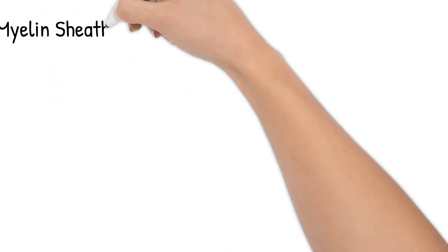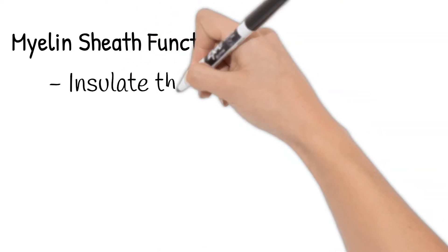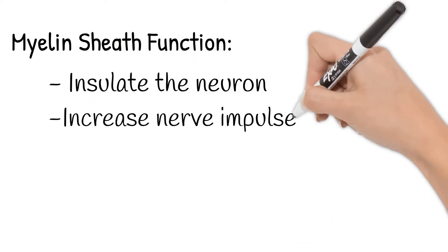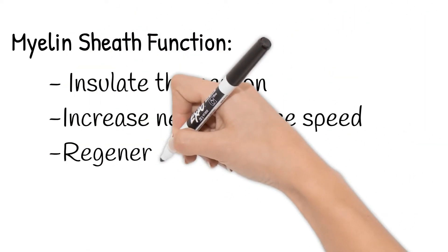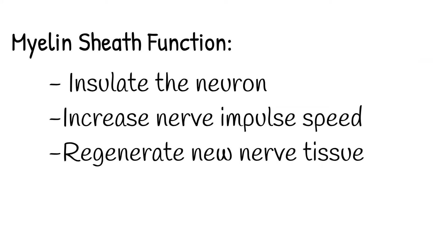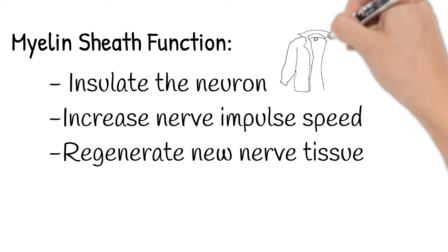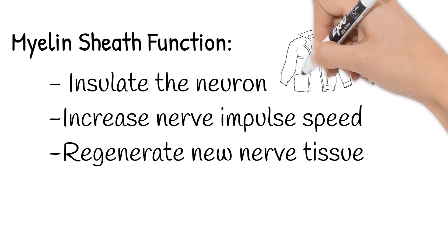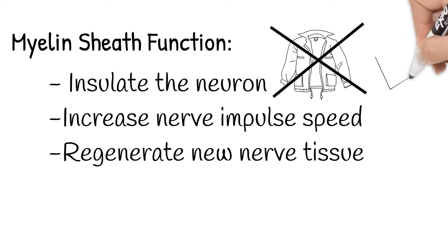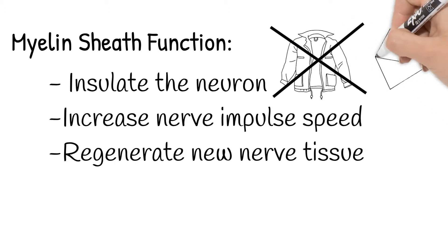The myelin sheath has three main jobs: insulate the neuron, increase nerve impulse speed, and regenerate new nerve tissue. The neuron isn't being insulated against the cold, but rather keeps the message from being lost as it travels the axon.